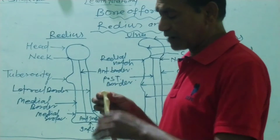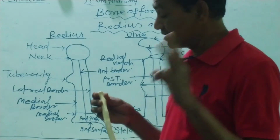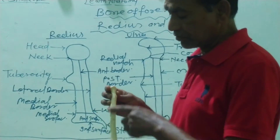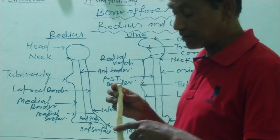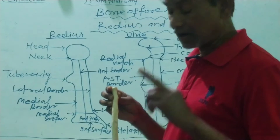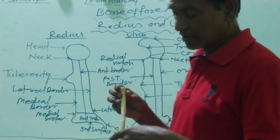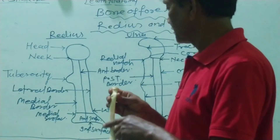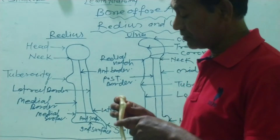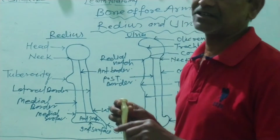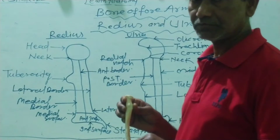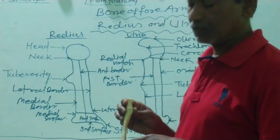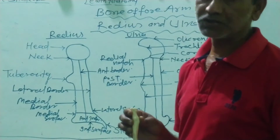The middle part, or shaft of the radius, presents three borders and three surfaces. First, the anterior border, directed anteriorly. The lateral border is also present. The medial border of the radius is the sharpest, with a crest-like structure, and it also forms the interosseous border.